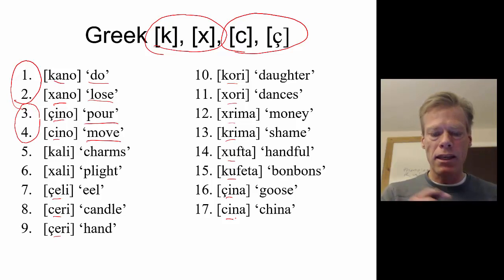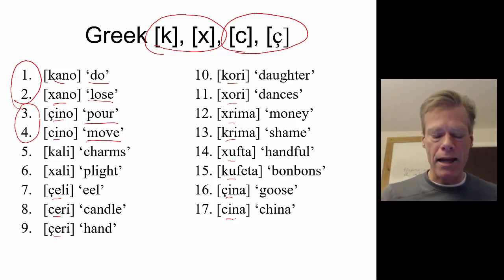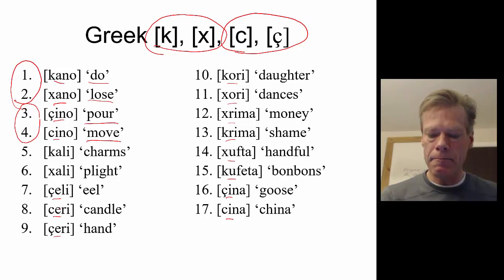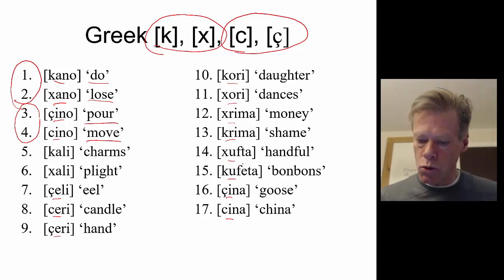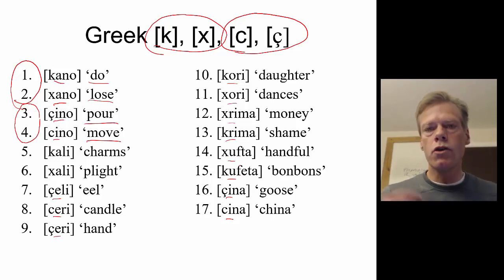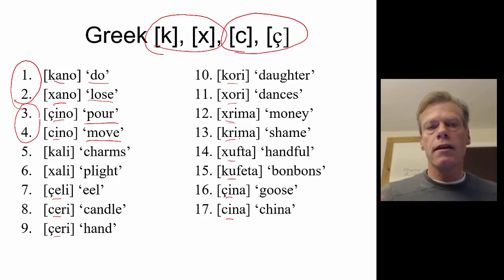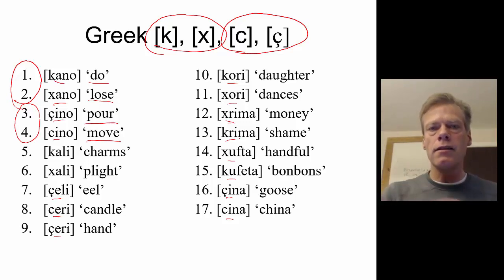Now we look at the environment immediately following the palatals to see if there's something distinctive about it. What we see is vowels like 'e' and 'a' — those are front vowels. Whereas the vowels following the velars are back vowels, and velars also precede consonants. This tells us that the velars are the underlying representation and the palatals are the derived form — the result of a rule.